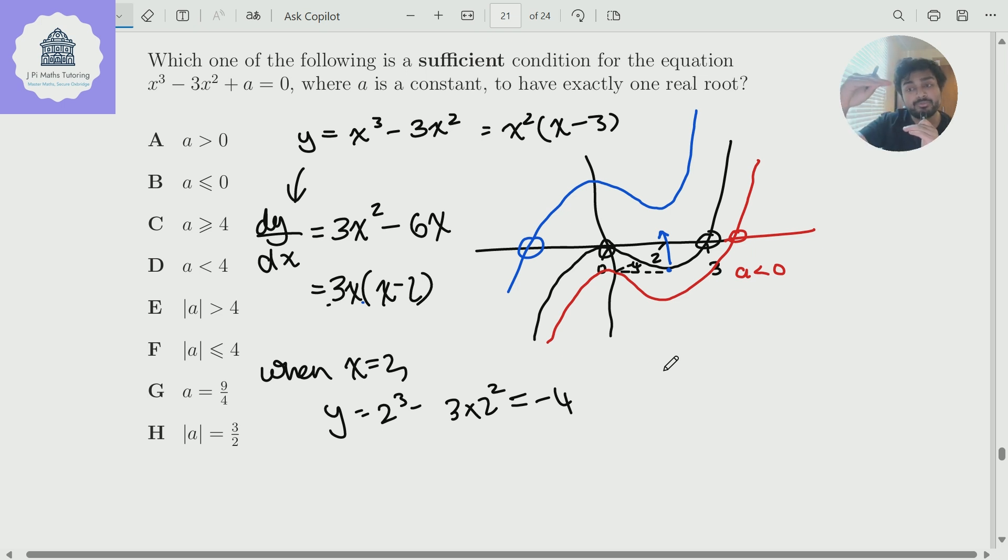And so that means that I need to move this black graph at least four units up, in fact, strictly more than four units, because if I did it for exactly four units, this turning point would be on the x-axis and would therefore be a root. So it would look something like that. And I'd have a root there and a root there, that's not allowed. So it has to move strictly more than four units up. So in the blue case, I can have a is bigger than four. So essentially, what we've shown here is that if we want this cubic to have one real root, we either need a to be less than zero or a to be bigger than four.